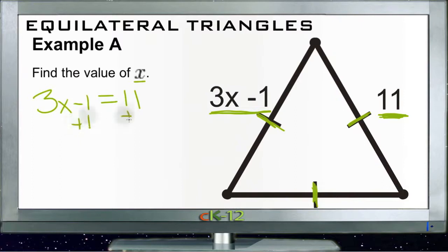And that negative 1 falls away, that leaves us with 3x over here on the left, equal to 11 plus 1 which is 12 on the right.